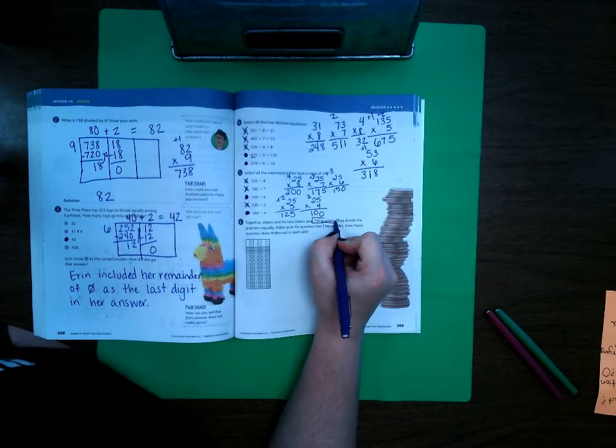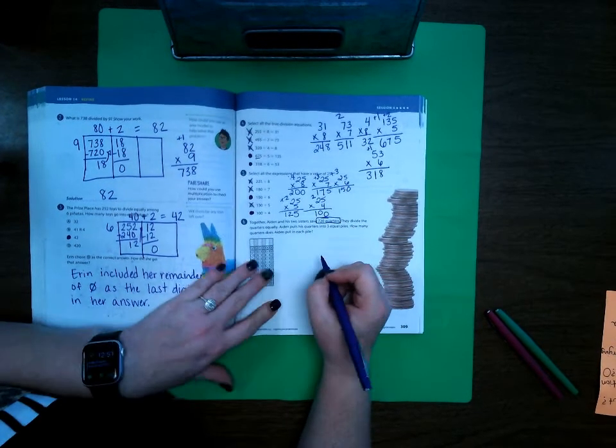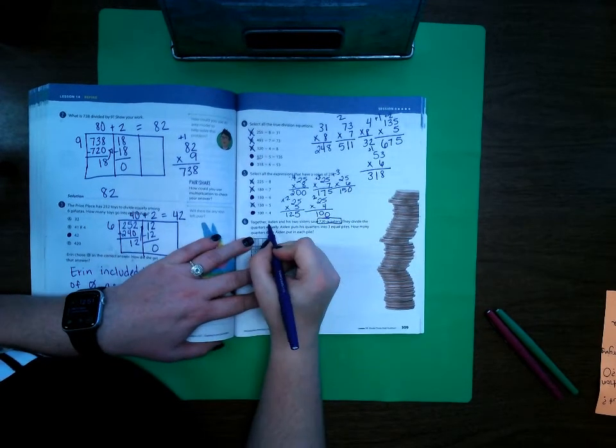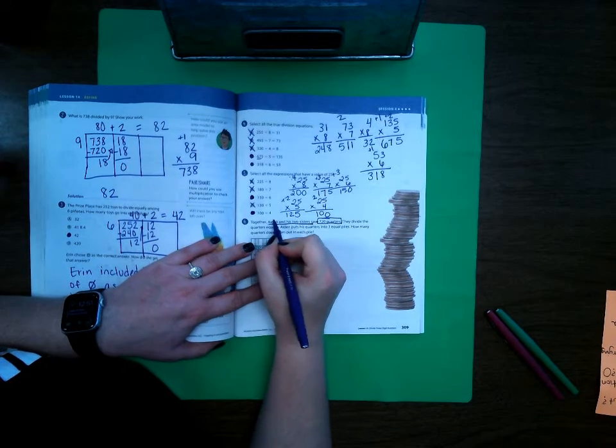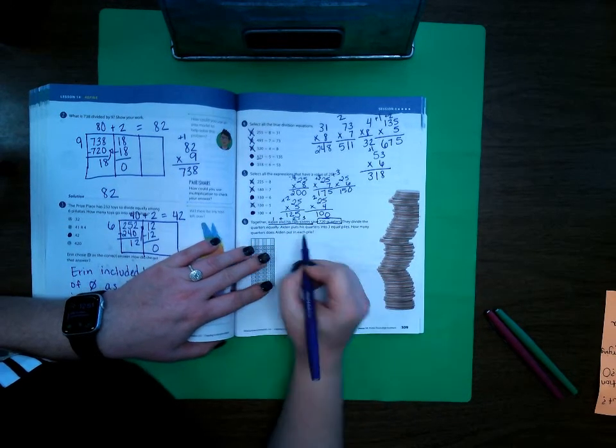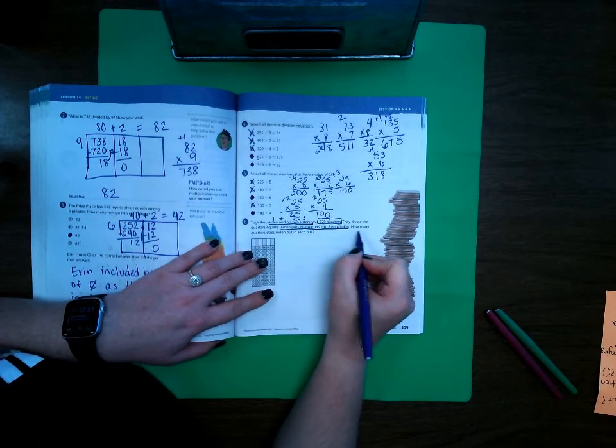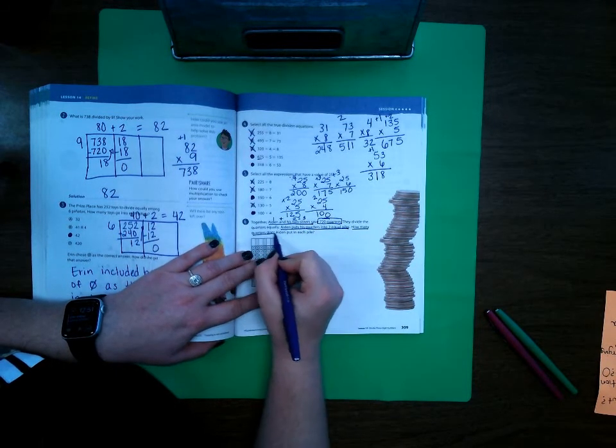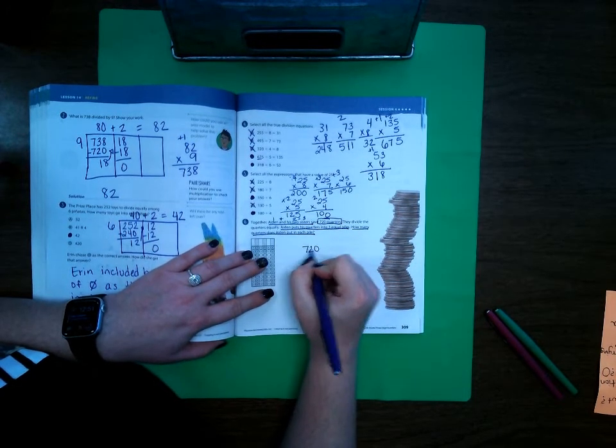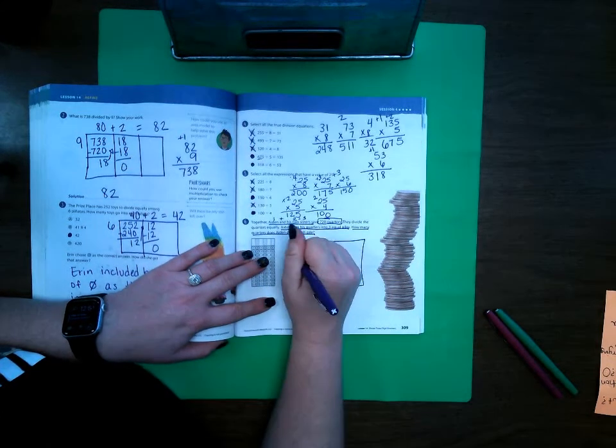All right number 6. Together Aiden and his two sisters save 720 quarters. They divide the quarters equally. Now this is where it gets tricky. It says Aiden and his two sisters, that means there's 1 plus 2, there's 3 of them. Then down here it says Aiden puts his quarters into 3 equal piles. How many quarters does Aiden put in each pile? So we have to do 720 divided by 3.